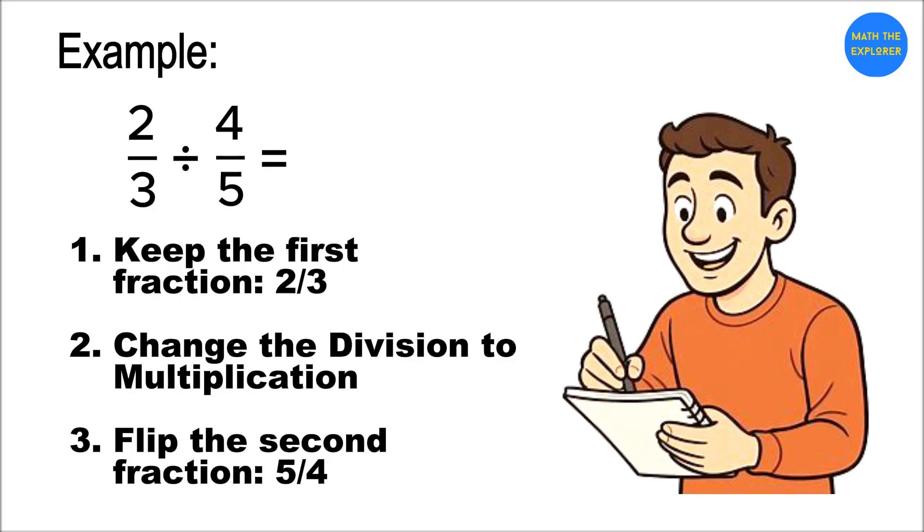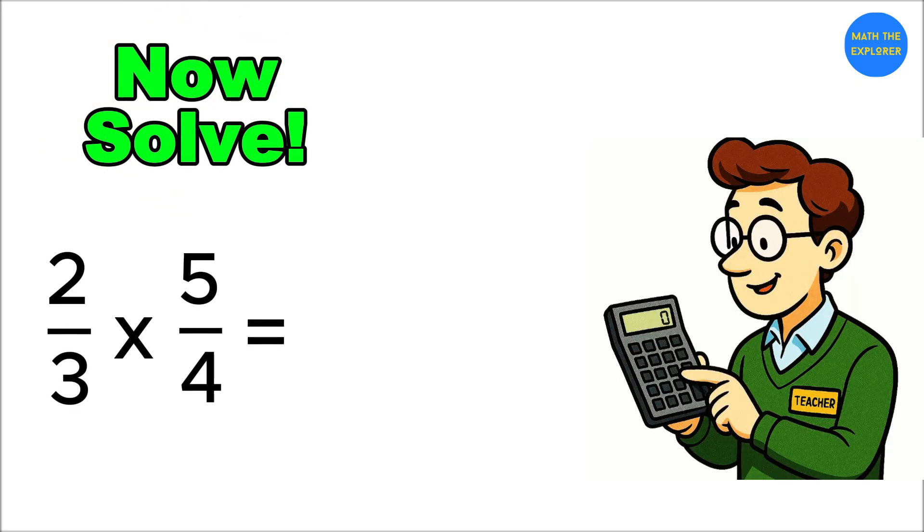Now solve: 2/3 × 5/4 = 10/12, which simplifies to 5/6. Challenge time: what's 3/5 ÷ 2/7?